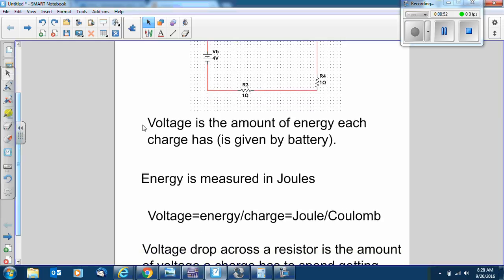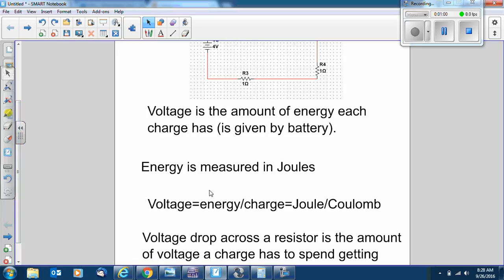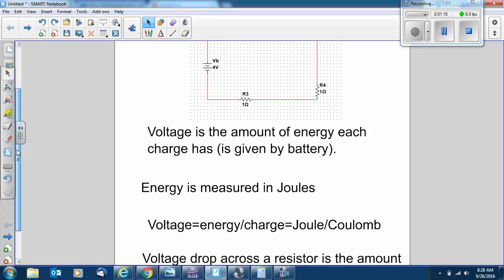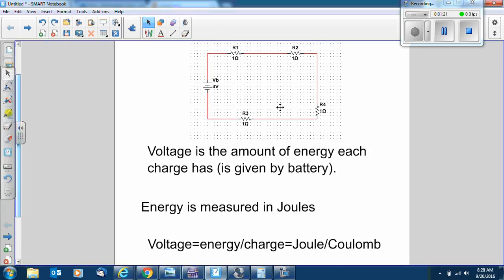Since energy is measured in joules, and you should remember that from your chemistry class, and voltage is the amount of energy each charge has, then the units of voltage would be energy per charge, or joules per coulomb. That works out really well because we have current flowing through our circuit in coulombs per second, also known as amps. And then we have voltage in joules per coulomb.